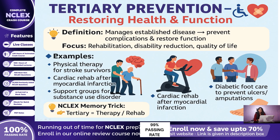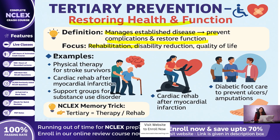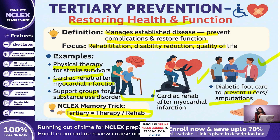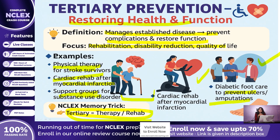Tertiary Prevention — restoring health and function. Finally, we come to tertiary prevention, which deals with patients who already have established disease or disability. Here, the focus is on rehabilitation, preventing complications, and improving quality of life. Examples include physical therapy for stroke survivors, cardiac rehabilitation after a myocardial infarction, support groups for patients with substance use disorder, or teaching a diabetic patient about foot care to prevent ulcers and amputations. NCLEX Tip: If the intervention is aimed at reducing disability, preventing complications, or restoring function, then it is tertiary prevention. Think: Tertiary equals therapy/rehab.